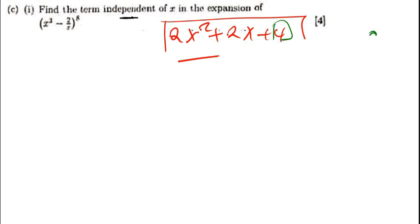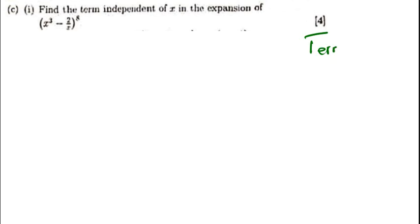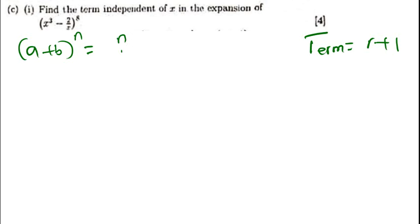So you guys know that whenever we're talking about a term, there is a formula I want you to understand. A term is given by r plus 1. Now what is this r whenever we're talking about binomial expansion? So if I have got (a + b) raised to the power n, this is given by n choose r, then a raised to the power n minus r, b to the power r.